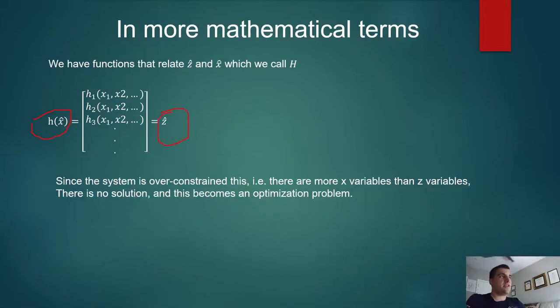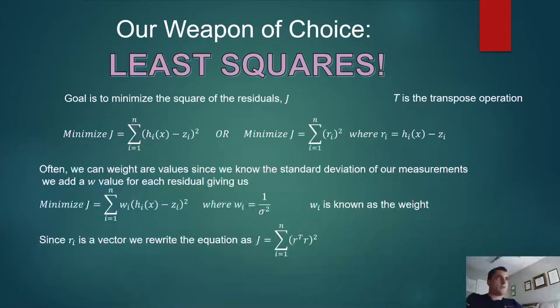Since we have more measurements than we do variables, we have n plus m unknowns and m equations. We'll have more equations than unknowns, which means that there are more than one solutions to this, which means this becomes an optimization problem. For the purposes of this talk, we're going to use the least squares method. There are other ways of solving this as an optimization problem, but least squares is the most accurate.